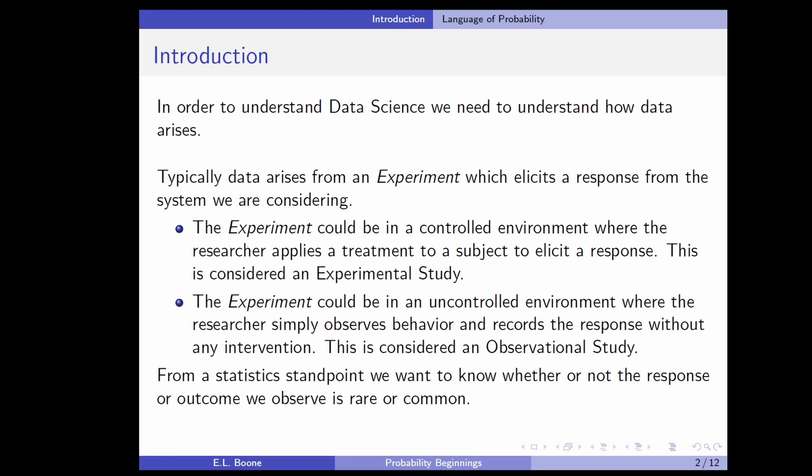Another type of experiment is an uncontrolled environment where the researcher simply observes behavior and records a response without any intervention — this is considered an observational study. From a statistics standpoint, the reason we want to know about probability is we want to know whether the response we see is rare or common. If it's really rare, then maybe something significant is going on in the sense that it's not what we expected.